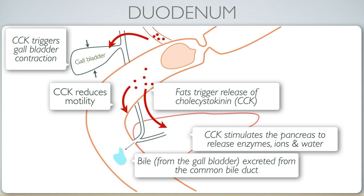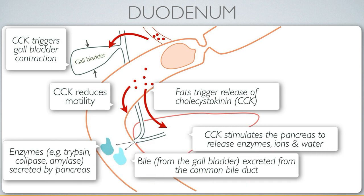CCK also stimulates the pancreas to release enzymes, ions, and water — including a variety of enzymes such as trypsin, colipase, amylase, and others secreted by the pancreas.